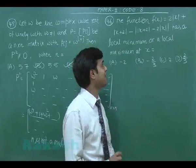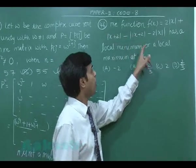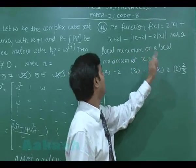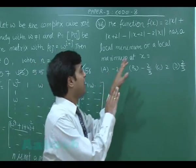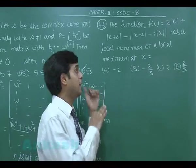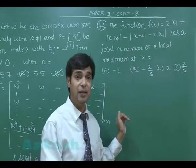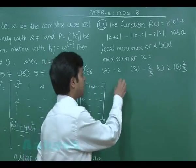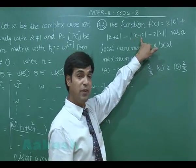Let us move to question number 46. The function f(x) = 2|x| + |x + 2| − ||x + 2| − 2|x|| has a local minimum or local maximum at x equals some value. Four options are given. We rewrite the function by breaking it at its critical points — wherever the modulus becomes 0 — to draw the graph.